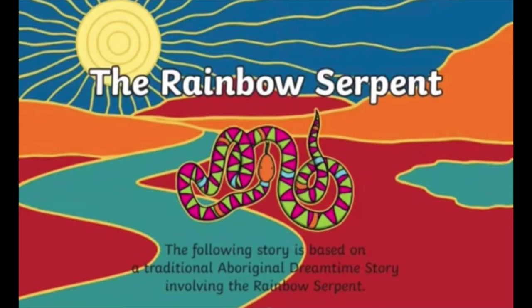Here's the book The Rainbow Serpent. The Rainbow Snake is an Aboriginal earth origin folk tale. It's make-believe, it's not real, but it's told over and over again. The rainbow serpent in this story is based on a traditional Aboriginal dreamtime story involving the rainbow serpent.